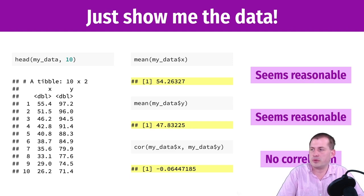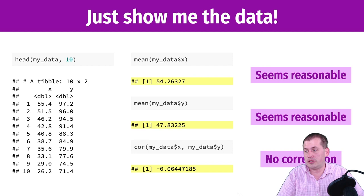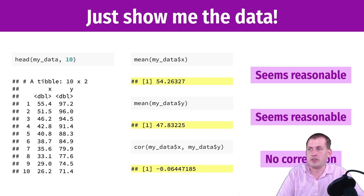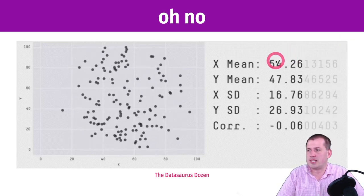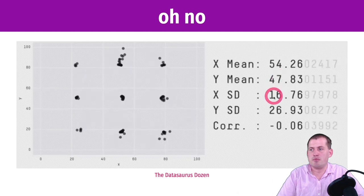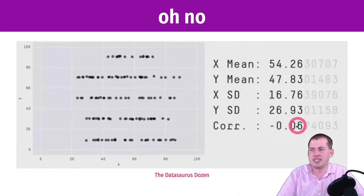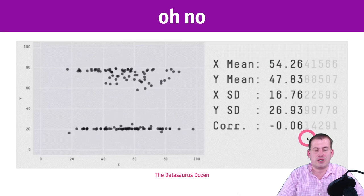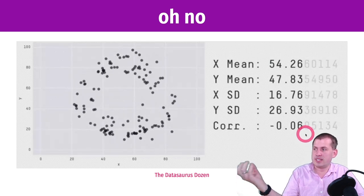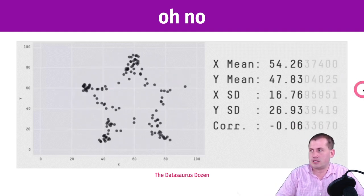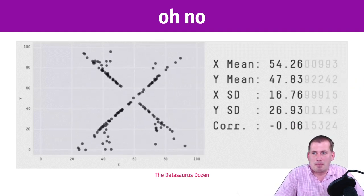The problem with that though is, without looking at the data and actually plotting it, we don't know what the underlying trend actually looks like. We know there's no correlation, but it could look like a whole bunch of different things. If you look at this animation here, every single one of these scatter plots has the same mean for X and Y and standard deviation for X and Y and the same correlation of having no correlation.